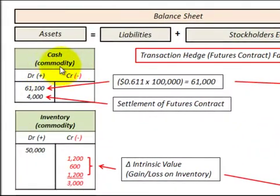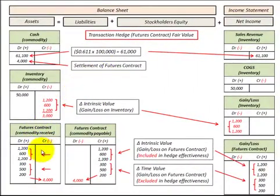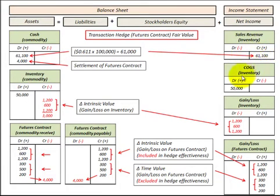For our cash account, we increase it for the actual price received when we sold the inventory. We also settled this futures contract, which was receivable, so we increased our cash by the value of that futures contract — in this case $4,000. Sales revenue is based on the actual price received for the sale of inventory, and cost of goods sold is the carrying value of that inventory.